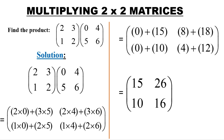Multiplying 2 by 2 matrices. Find the product of these 2 matrices: 2, 3, 1, 2 and 0, 4, 5, 6. Both of these matrices are of order 2 by 2 — they both have 2 rows and 2 columns. So this is how we multiply them. We start by multiplying the elements in the first row by the elements in the first column of the second matrix.